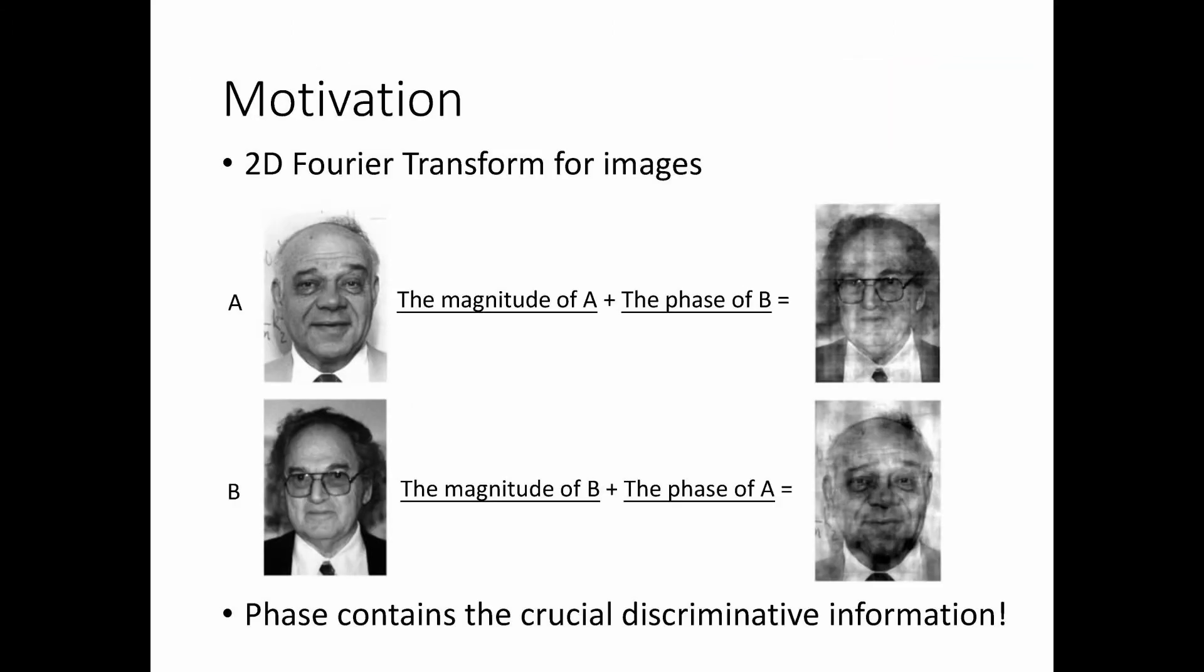Our motivation comes from the two-dimensional Fourier transform. From the slides, we observe two face images, A and B. If we use the magnitude of A and phase of B to reconstruct a new image, such image can be visually recognized as B.